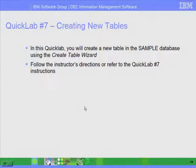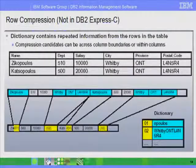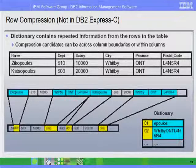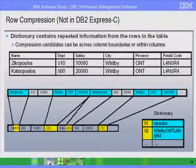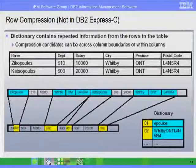You can now work on QuickLab number 7, which will allow you to practice creating a new table. I suggest you pause this presentation and take a look at QuickLab number 7 instructions. Now, assuming you've finished QuickLab 7, I'm going to talk about two features related to tables that are not in DB2 Express-C. They are present in DB2 but not with DB2 Express-C — they may be available with other editions.